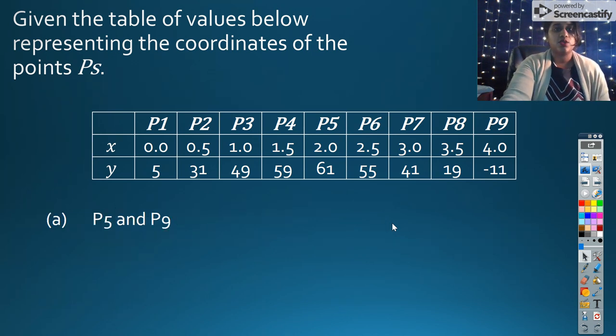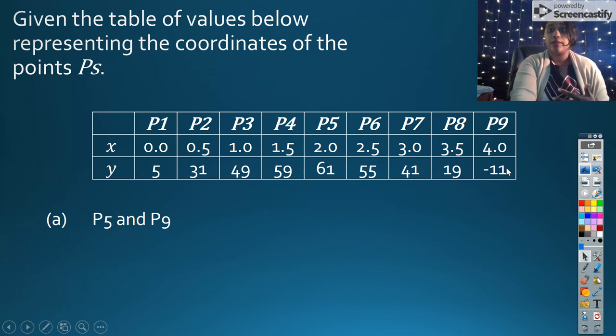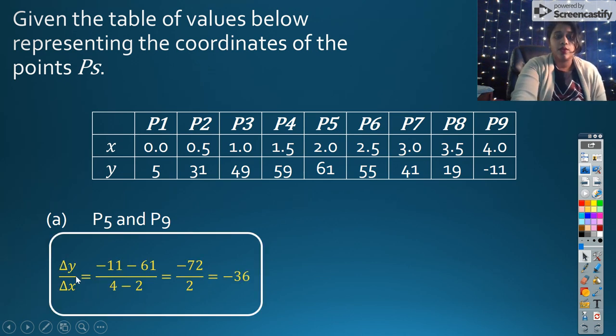So we have this question right here. What we're trying to do is estimate the value of our slope between P5 and P9. So that's this category right here and this category right here. Simply put, I'm going to put in my change in y and my change in x and plug it in. It's as simple as that. So here's that work. Here's my change in y over change in x.